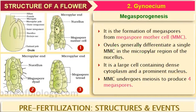The MMC undergoes meiosis. We know the process of meiosis in detail. When one MMC cell undergoes meiosis, it forms four megaspores as a result. These four cells are called the megaspore tetrad, and they are arranged in a vertical sequence.